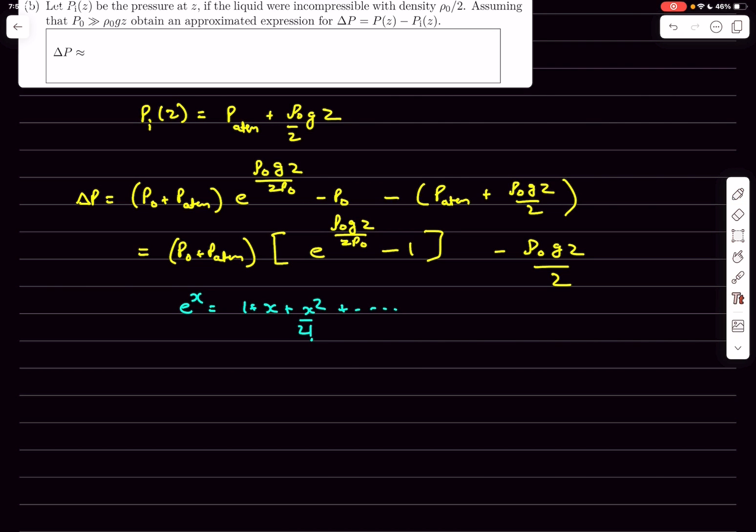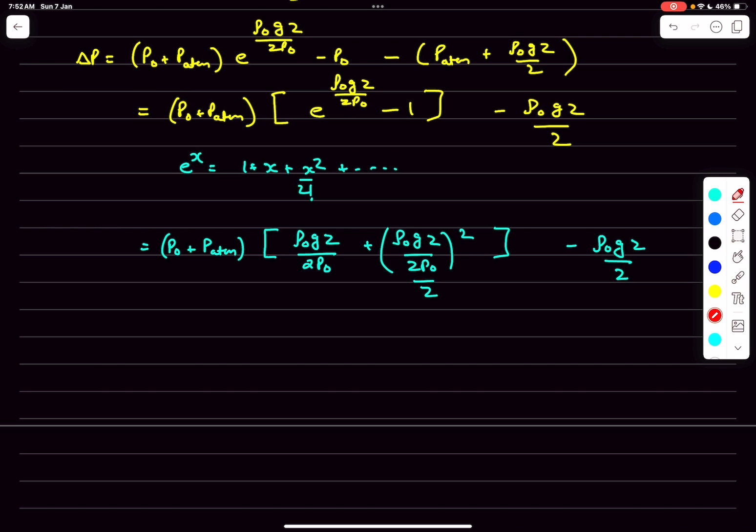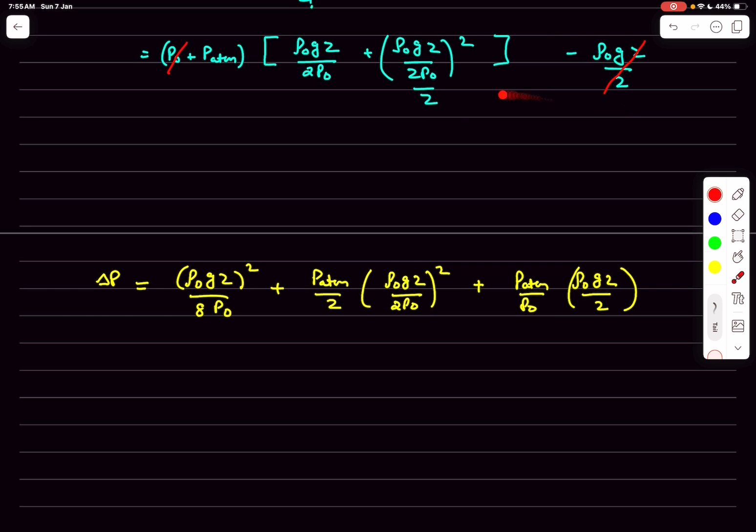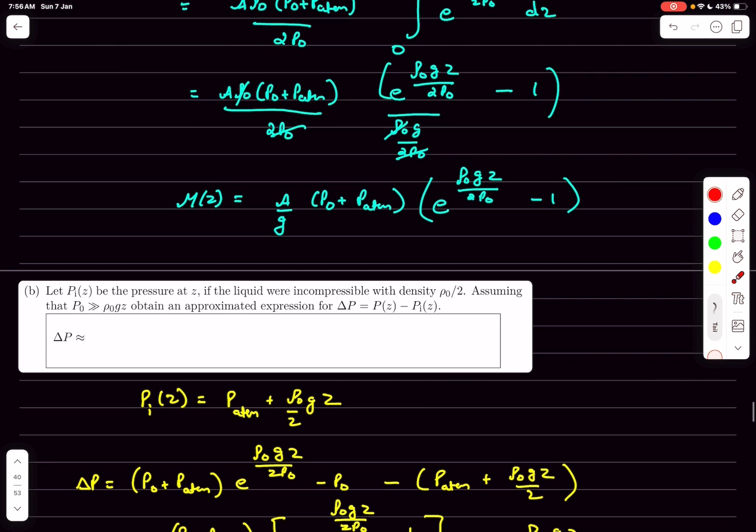As you can see, this 1 over here will cancel out with this 1. This ρ0gz/2 will cancel out with this expression. So after expanding, this is the final second order approximation of ΔP. So this is what they asked us in the second question.